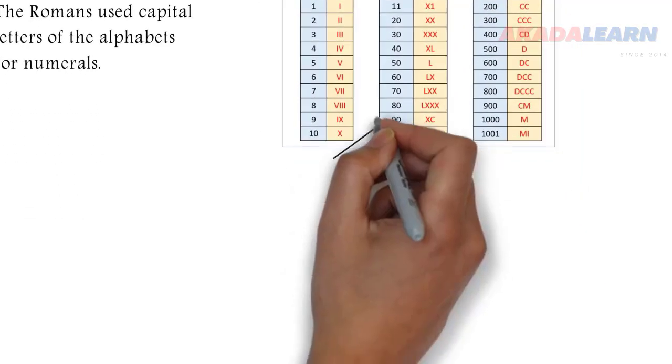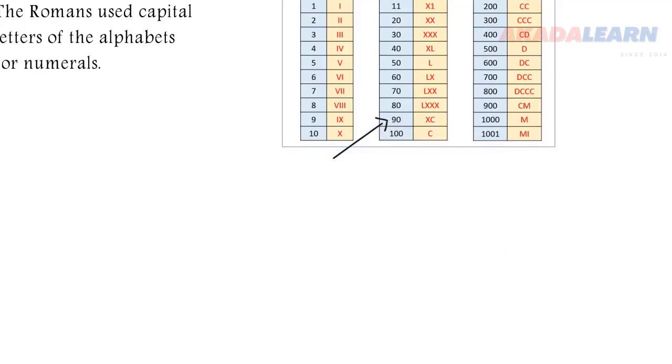If you see that, there's an arrow pointing to 90. When we have a smaller number coming before a larger number, it means subtraction. So XC means 100 minus 10, which is 90. Also, 600 is circled. When we have a smaller number coming after a bigger number, it means addition. So DC means 500 plus 100.